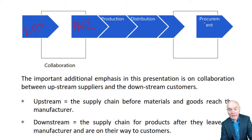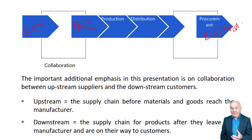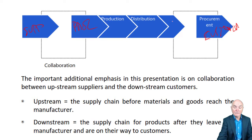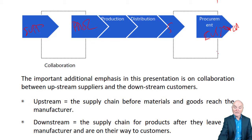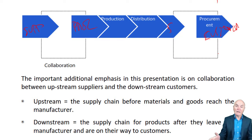Out here you have your customer. Their procurement department, if it's another company, will be liaising with your sales and distribution department. They will be negotiating — are you going to send the goods, or are they going to come for them? These customers will decide whether to buy just from you or from a number of different suppliers, maybe to play one off against the other.